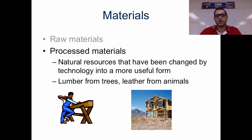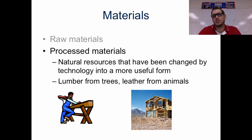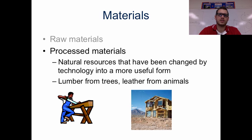Then we go to processed materials. These are natural resources that have been changed by technology into something more useful, just like lumber from trees or leather from animals. We're still using that material, but it's been cut, it's been tanned, dried, or shaped differently.